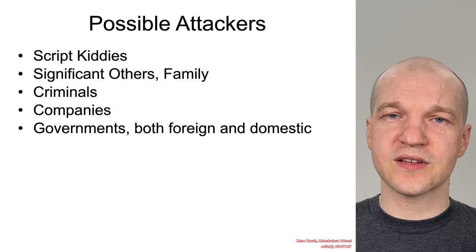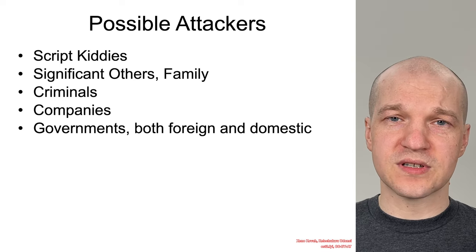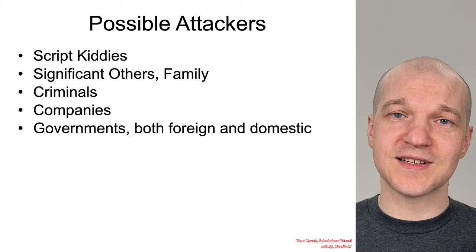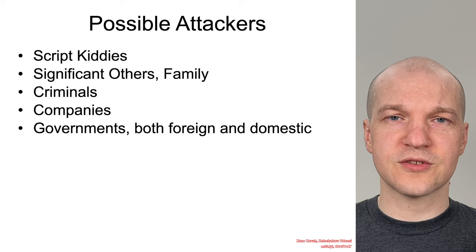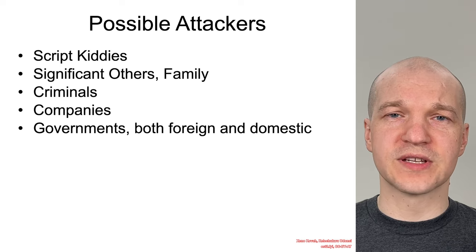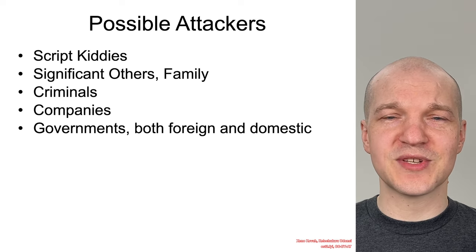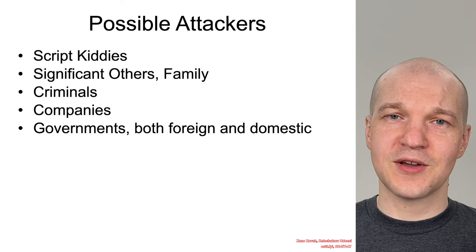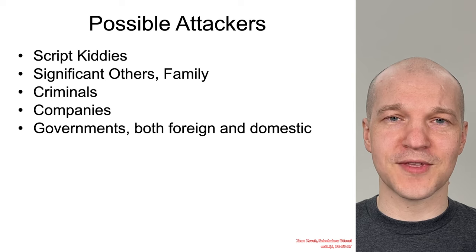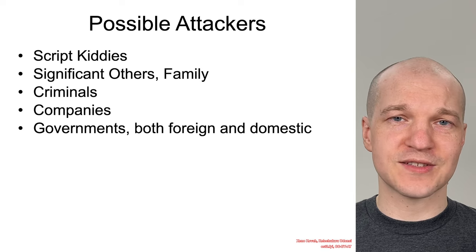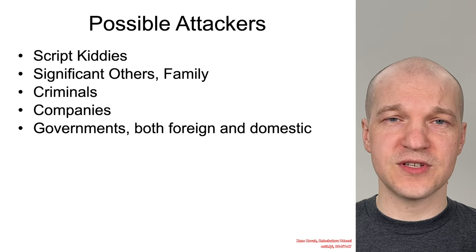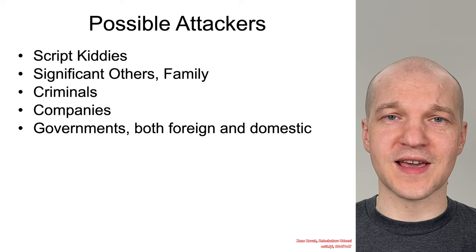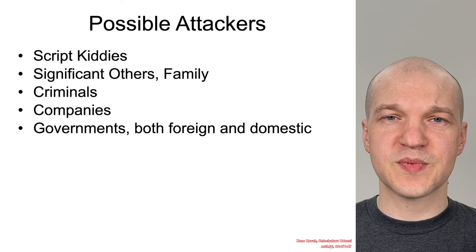When we talk about possible attackers, it's broader than you might think. It can start from the traditional script kiddy — someone who doesn't really know how attack tools work but runs the scripts and successfully exploits systems. The attacker could also be a spouse, significant other, or family member of the victim. Criminals, whether individual or organized, ranging from small-time individuals up to highly coordinated groups of dozens or hundreds of people working toward a common goal, are also potential attackers.